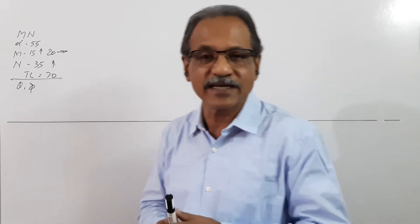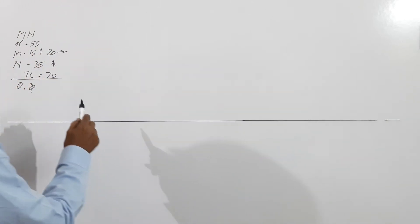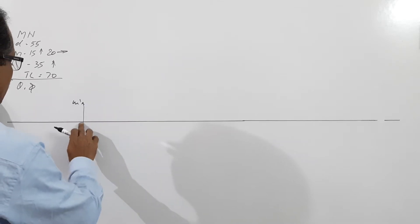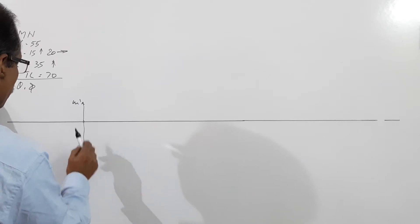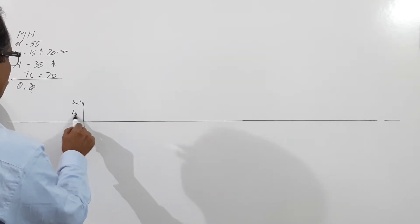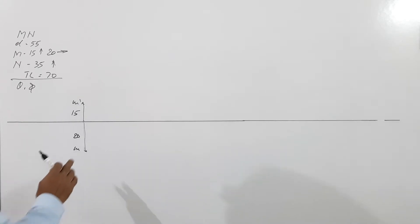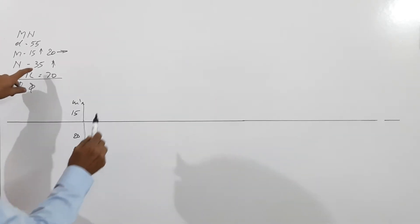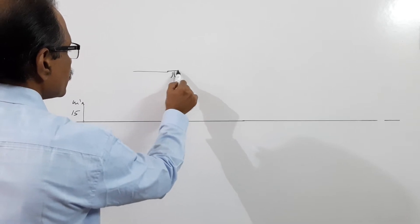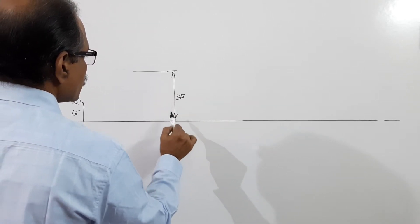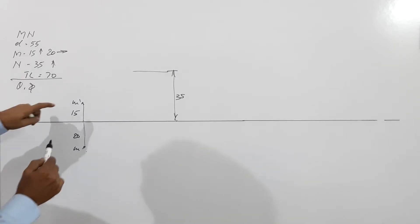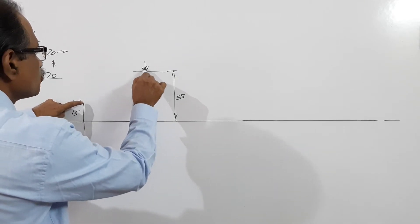Let's try this. First of all we will locate end M: 15 mm above HP is M dash, and 20 mm below the XY line is M. This is 15, this is 20. Then 35 mm above, draw a horizontal line — this is 35 mm above. Now the elevation length of the line is given as 55 mm. Take 55 in your compass and cut an arc. This is B dash.